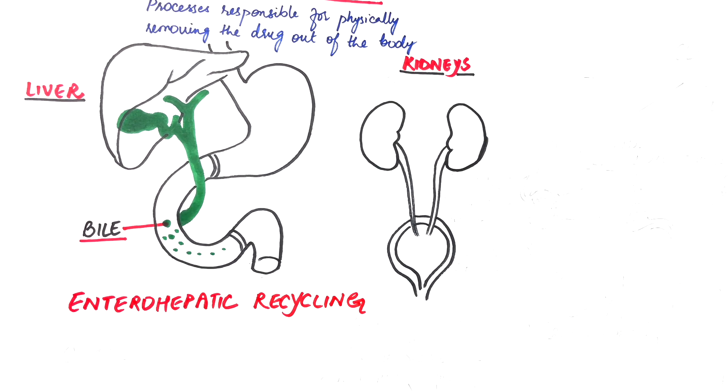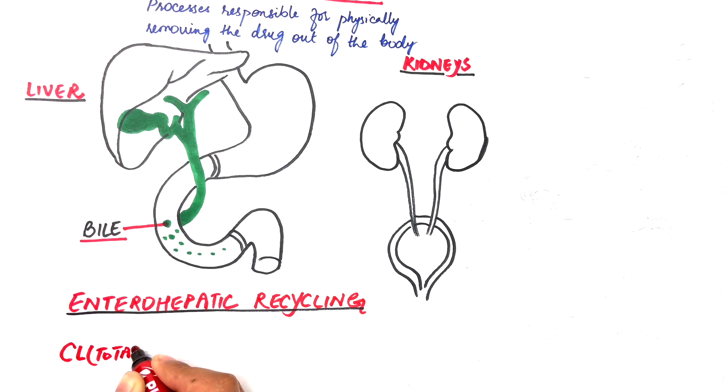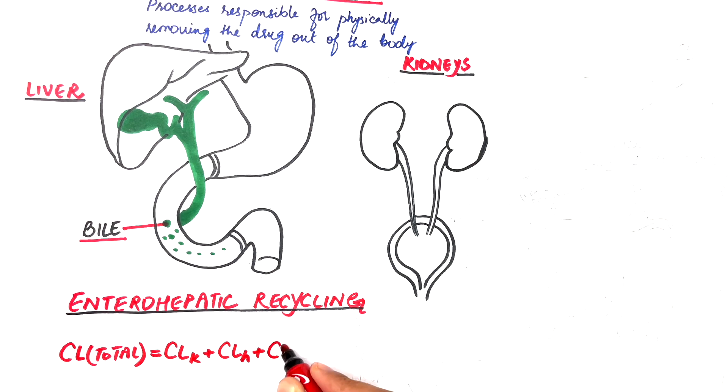The total medication clearance is described by the following equation: CLtotal equals CLK plus CLH plus CLP plus CLOther. Where CLK reflects kidney clearance, CLH reflects hepatic clearance, CLP reflects pulmonary clearance if the drug is volatile, and CLOther integrates all other secondary sources of excretion such as breast milk, sweat, saliva, and excretion via hair follicles. However, their contribution tends to be very small.